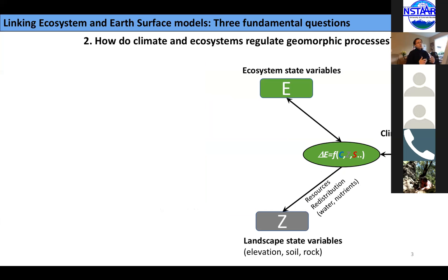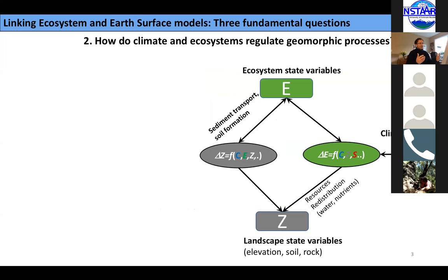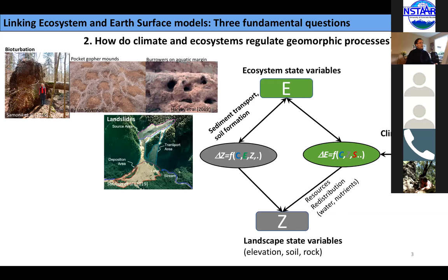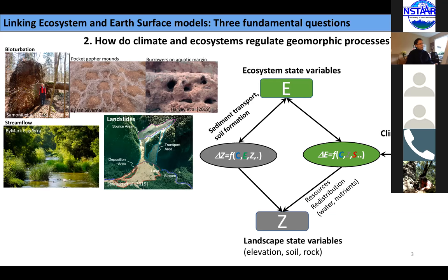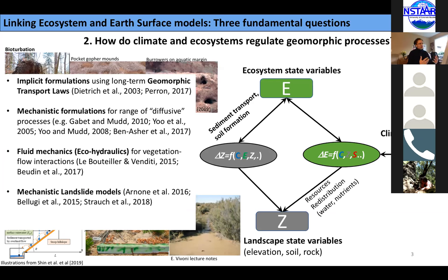The next question is: how do climate and ecosystems regulate geomorphic processes, so that we can link ecosystem process and ecosystem state variables with the state variables of the landscape — like elevation, soils, and rock properties. The hillslope processes in this category include bioturbation, which includes tree fall, pocket gopher mounds, burrowing animals, landslides, and the influence of vegetation on flow properties, rain splash, and sheet wash erosion. There has been a lot of work to quantify these processes, which I'll categorize into four different categories.